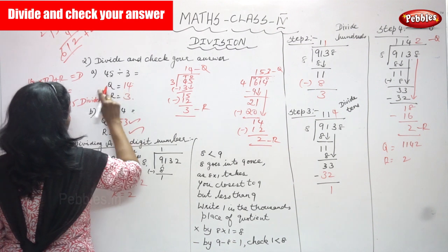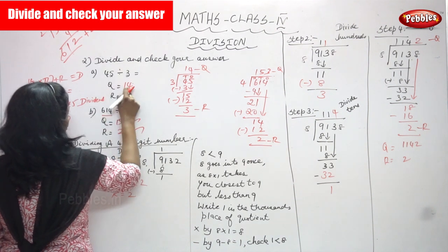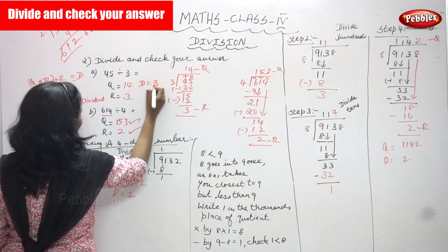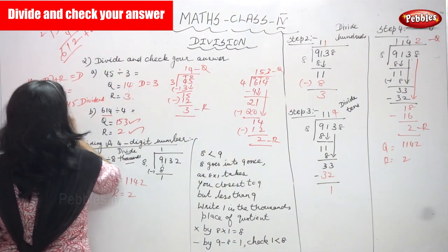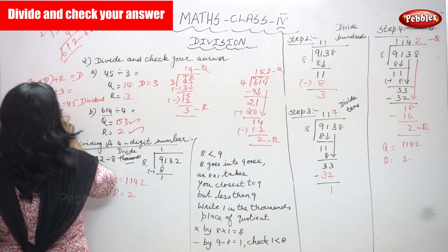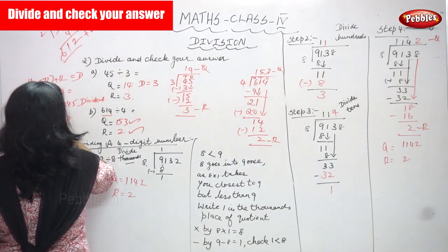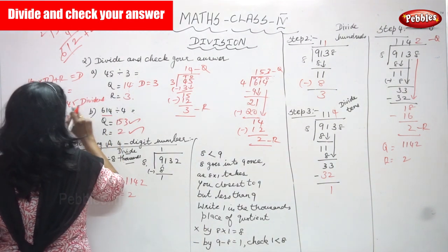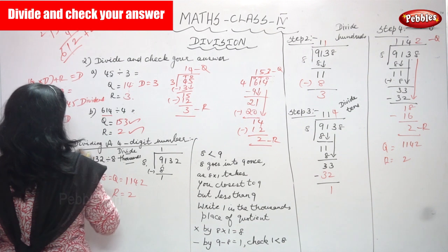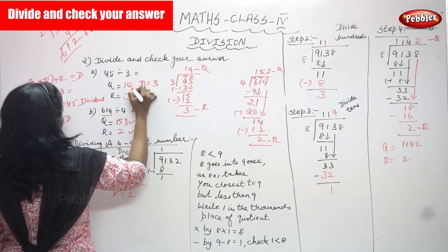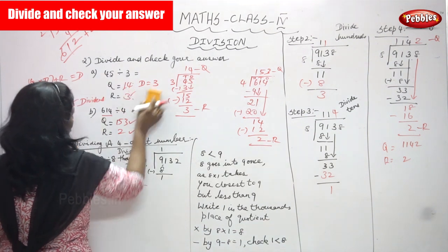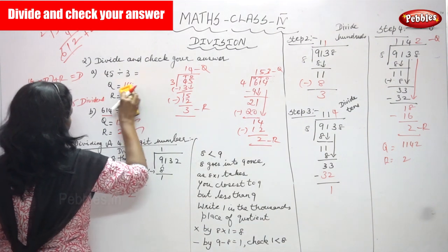The quotient is 14 and the divisor is 3. 14 into 3 gives 42. 42 plus the remainder 3 gives 45. So the quotient and remainder are correct.